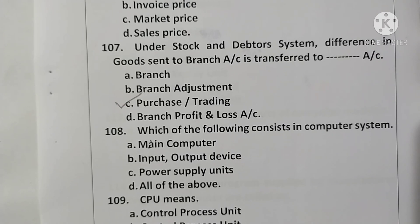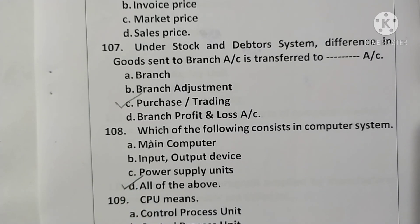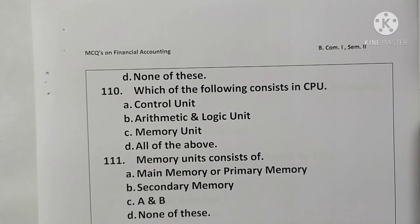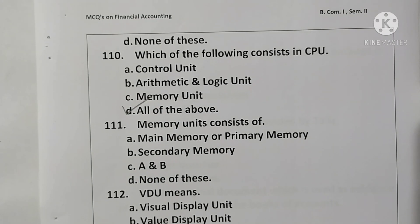Question 108: Which of the following consists of a computer system? Main computer, input/output devices, power supply unit, and all of these. Option D is correct. Question 109: CPU means Central Processing Unit. Option A is correct. Question 110: Which of the following consists of the CPU? Control unit, arithmetic and logic unit, memory unit — all of the above. Option D is correct. Question 111: The memory unit consists of main memory (primary memory) and secondary memory. Option C is correct.